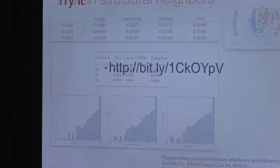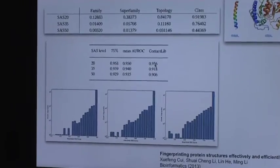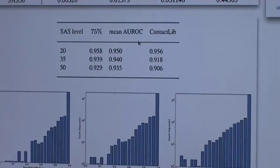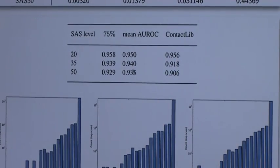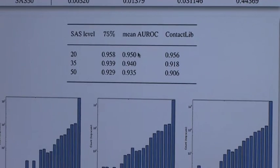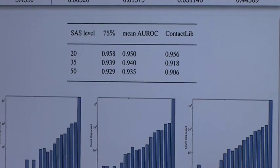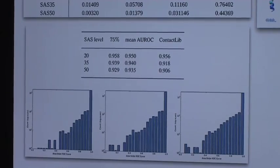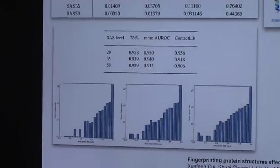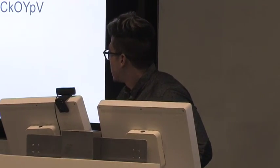These are our results. Compared directly with Contact Map Overlap, we are almost the same at this level. We perform a little better on the next levels. And the way of doing this is given a query structure, we can predict its classification and then the score of the neighbor is how much the classifier thinks the other structures belong to the predicted class.